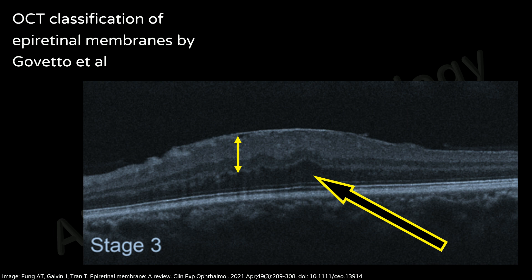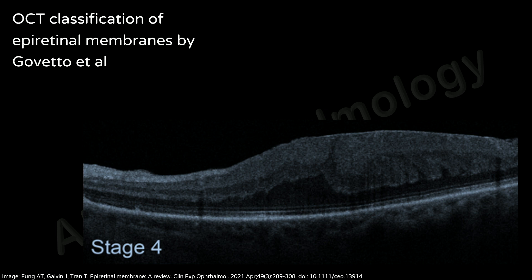Stage four is defined as an ERM complicated by significant retinal thickening and remarkable anatomic disruption of the macula. Continuous ectopic inner foveal layers are present. Retinal layers are noted to be significantly distorted, disorganized, and not clearly identified with OCT.